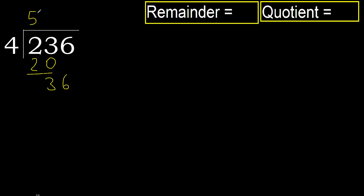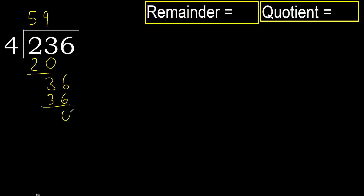36. 4 multiplied by 9 is 36 — 36 is not greater. Subtract: 36 minus 36 equals 0. Next.